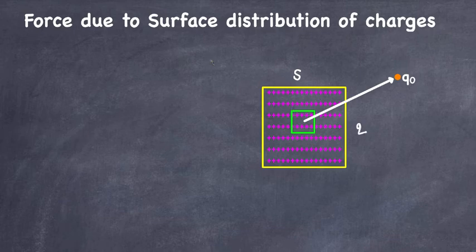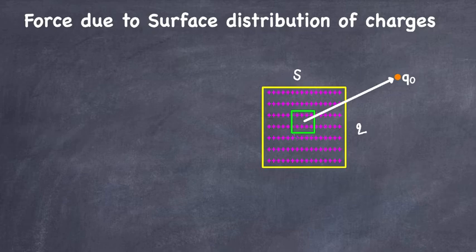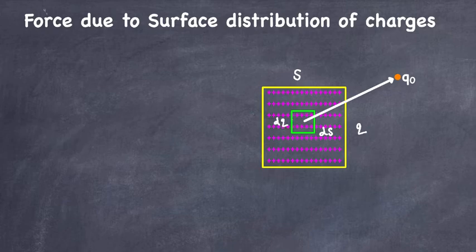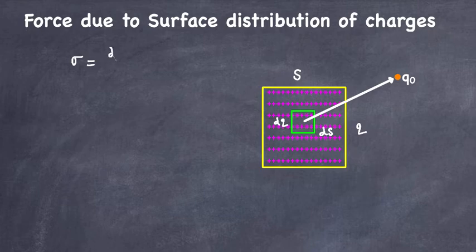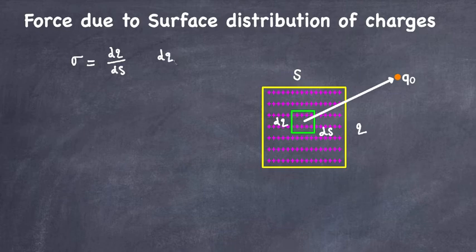We have a small area element — this green square — called dS. The charge on this small surface element is dQ. So we can write surface charge density Sigma as Sigma = dQ / dS, and therefore dQ = Sigma · dS.